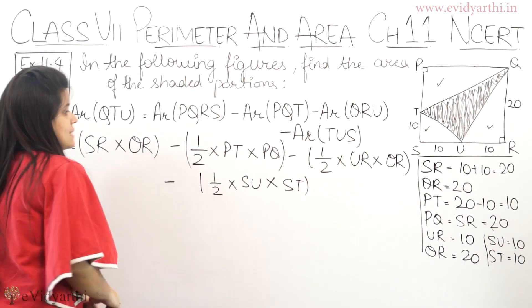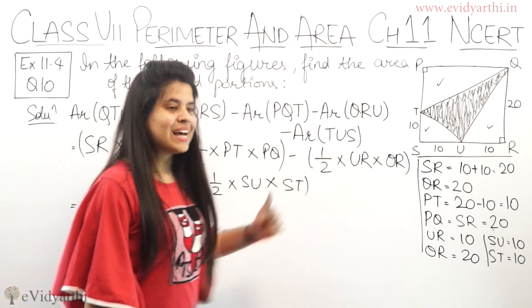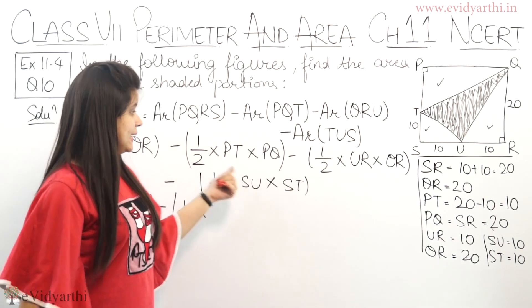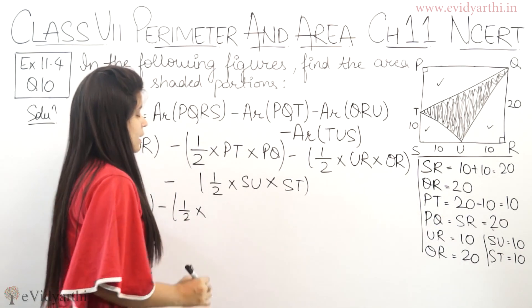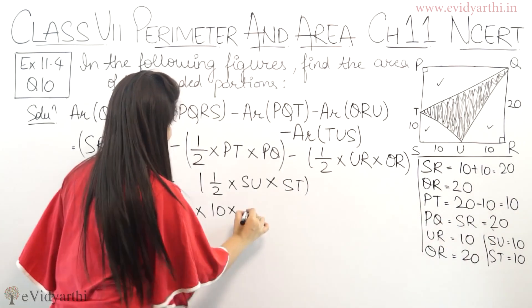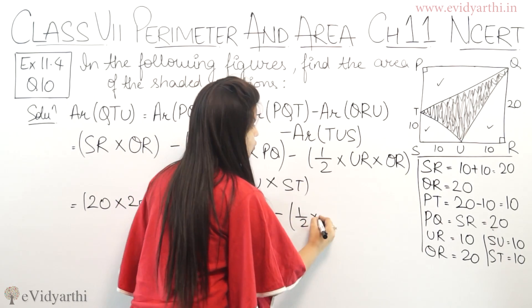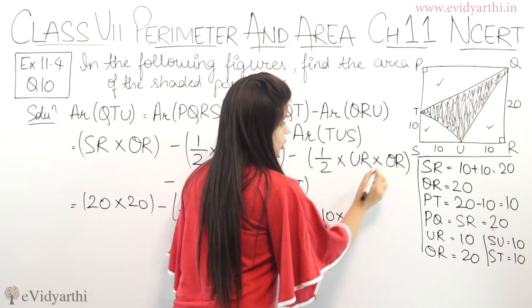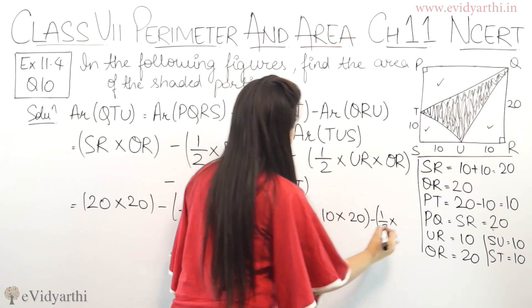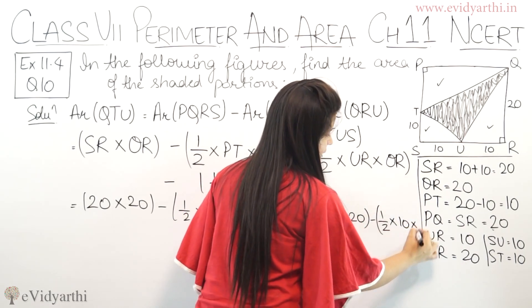Let's put the values. SR is 20 multiply by QR is 20. Minus half into PT is 10 multiply by PQ is 20. Minus half into UR is 10, QR is 20. Minus half into SU is 10 multiply by ST which is 10 again.